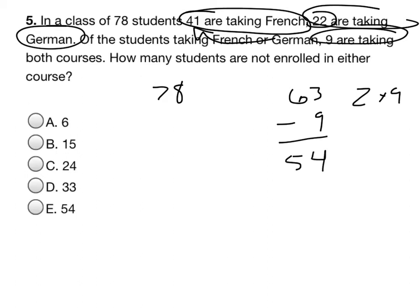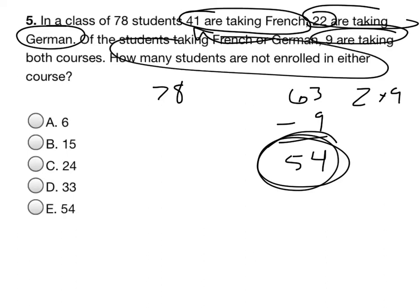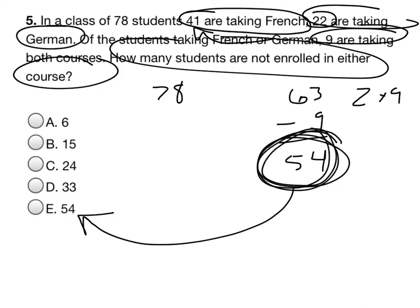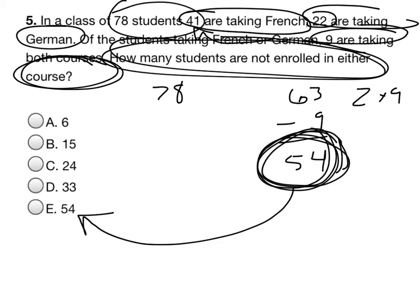So that is correct — nailed it. So 54 kids are taking either French or German or both. Now we want to know how many students are not enrolled in either course. They're trying to trick you — they're trying to say, oh, you got this answer so you're good to go. Well, you're not. You need to make sure you read the question before you answer. How many students are not enrolled in either course? So if 78 kids are in the class and 54 are taking one of those classes or both, we subtract them and you've got your answer.